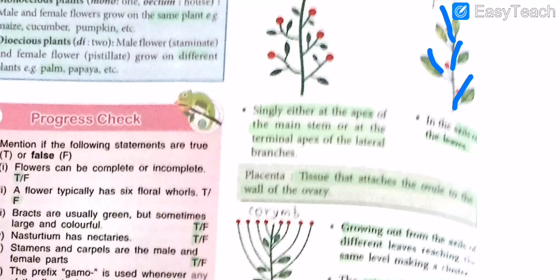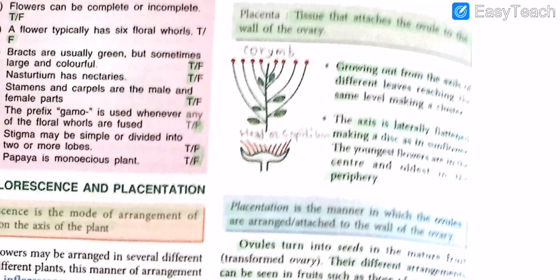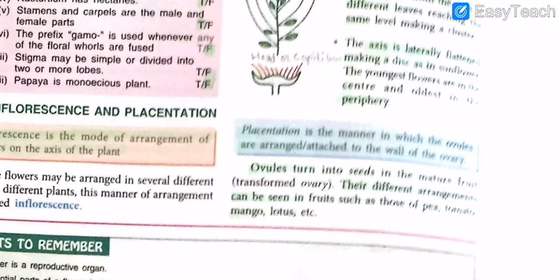Placenta is the tissue that attaches the ovule to the wall of the ovary. In some arrangements, flowers grow out of the axils of different leaves, reaching the same level and making a cluster, with the axis laterally flattened making a disc — as in sunflower — where the youngest flowers are in the center and the oldest are at the periphery. Placentation is the manner in which ovules are attached to the wall of the ovary. Ovules turn into seeds in the mature fruit, and different arrangements can be seen in fruits like peas, tomatoes, mangoes, and lotus.